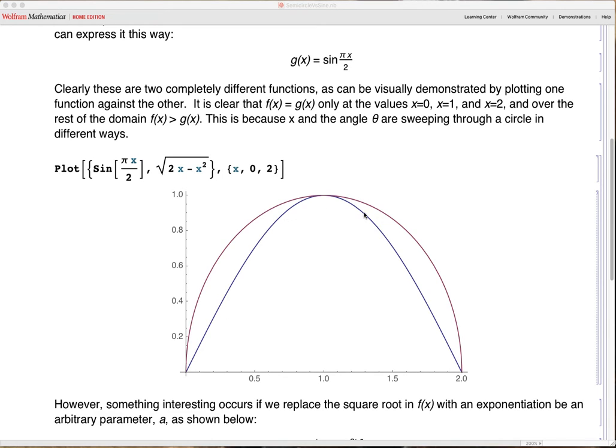Clearly these are different functions. I've defined both to be over the range 0 to 2. The circle would be defined by the square root of 2x minus x squared, and the sine has to be scaled in a particular way. The argument has to be scaled so that it goes from 0 to 2 instead of 0 to pi in radians, or 0 to 180 degrees.